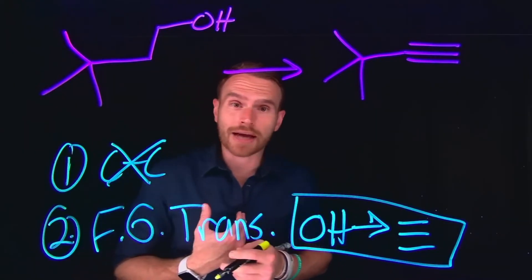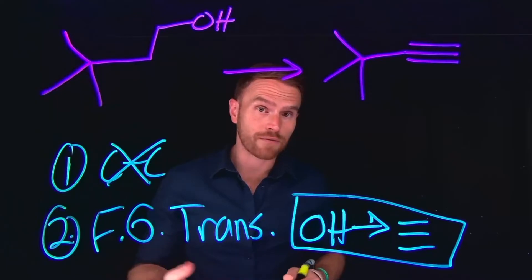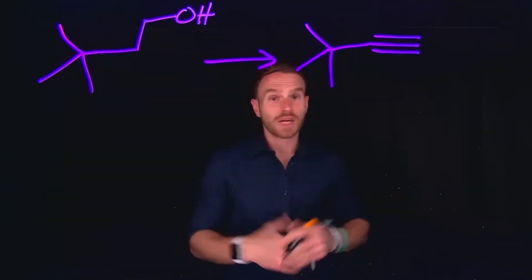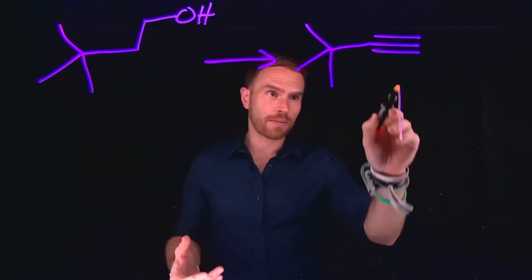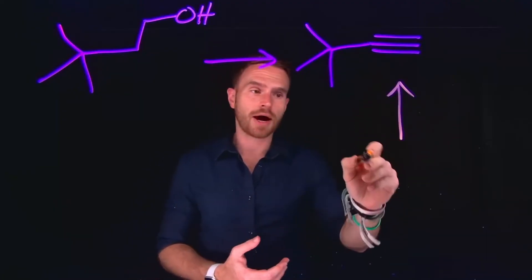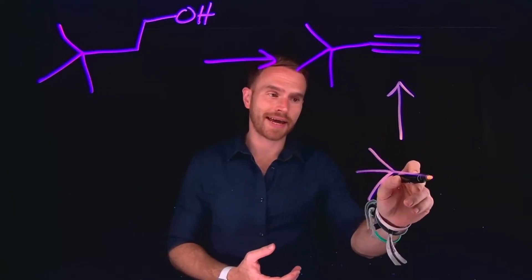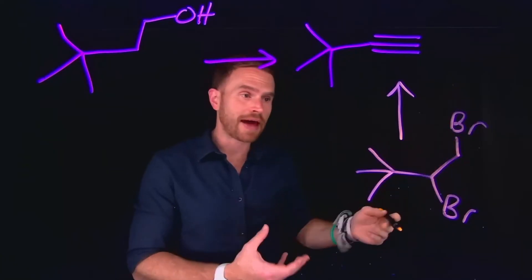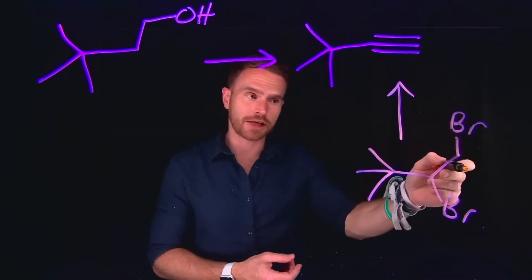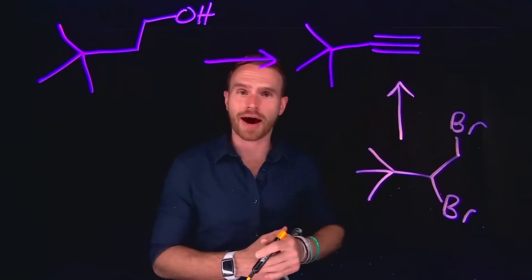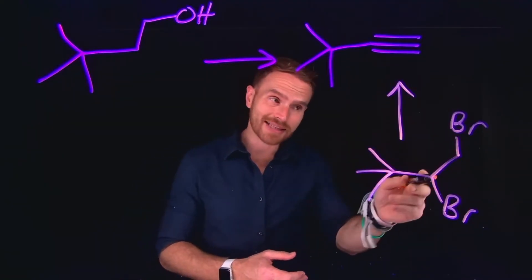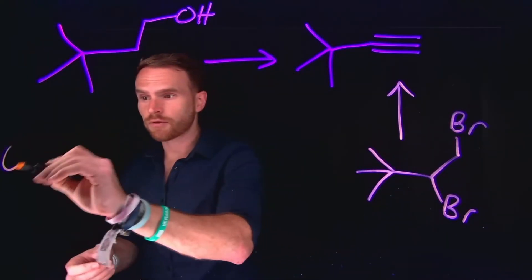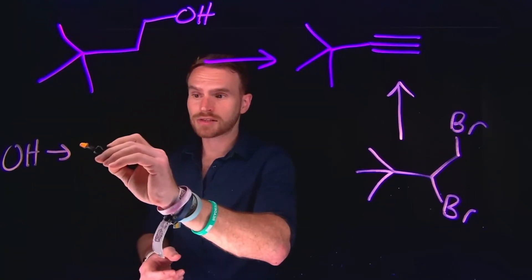Starting with the end in mind: the only transformation I know to convert something into an alkyne is if you have a vicinal dihalide. If there is a bromine atom here and a bromine atom here, I can do a double elimination to convert this alkane into an alkyne. Therefore, when devising my plan, the last step is likely this transformation. The next thing I should think about is how to convert an alcohol into something that has two bromines on it.